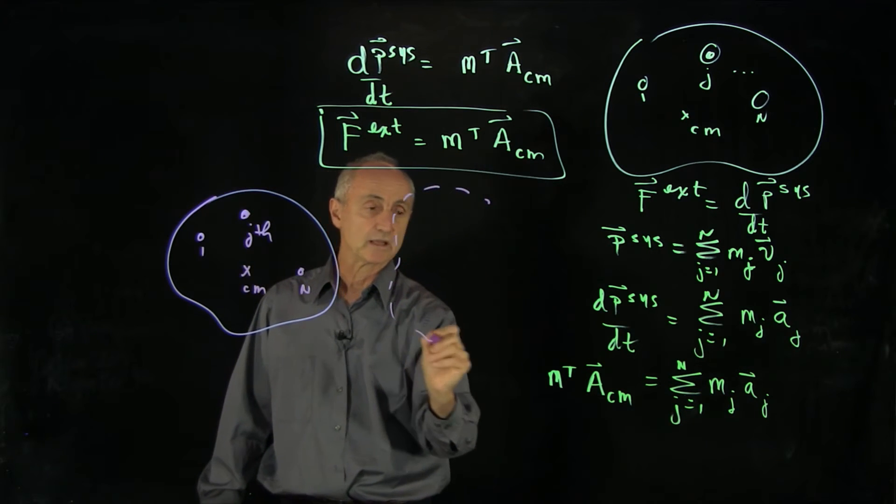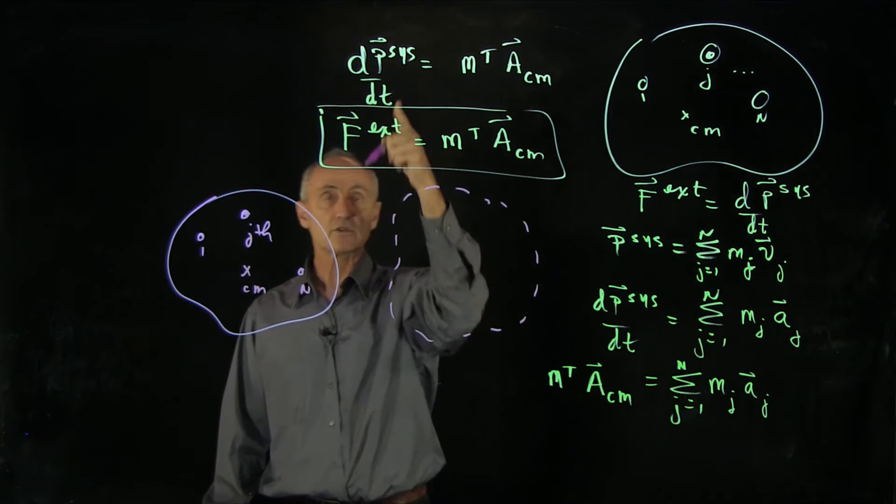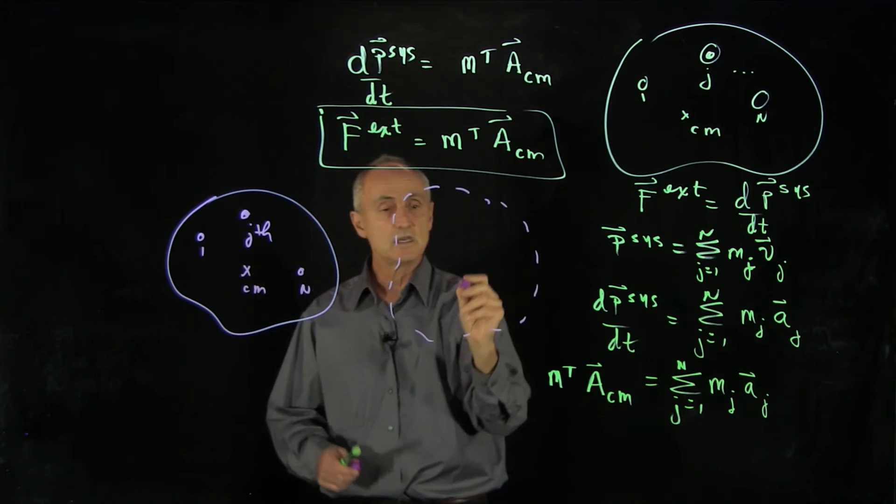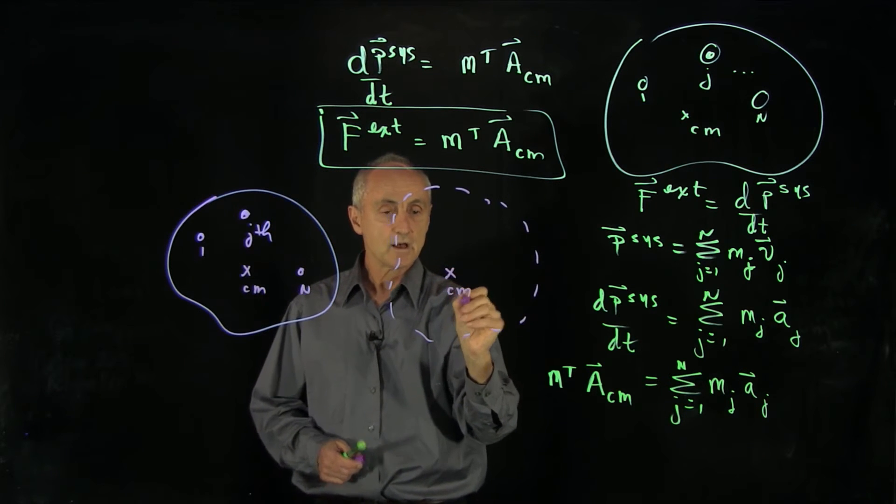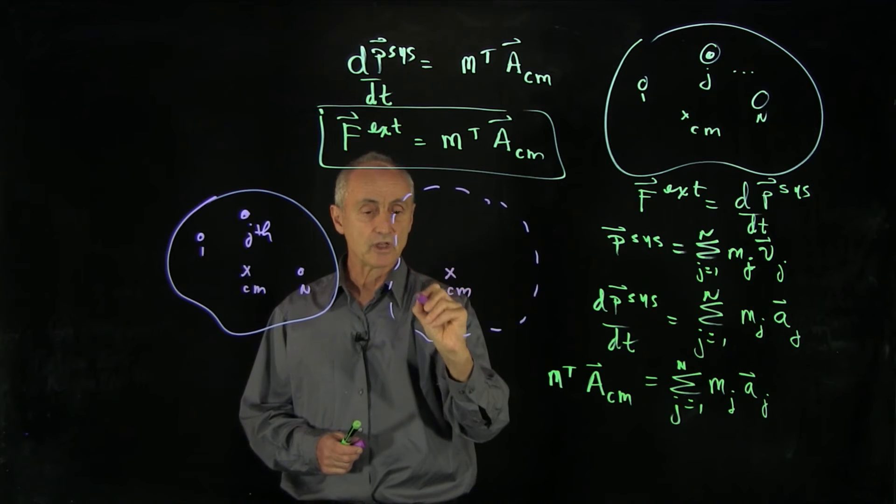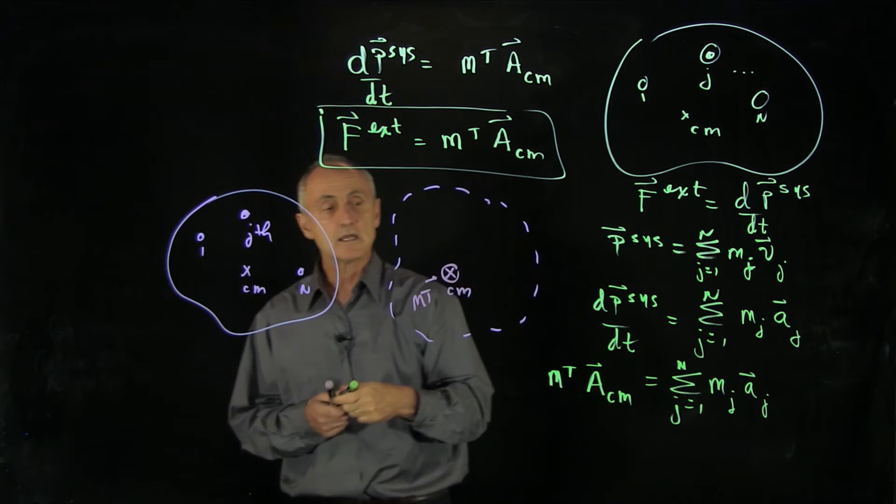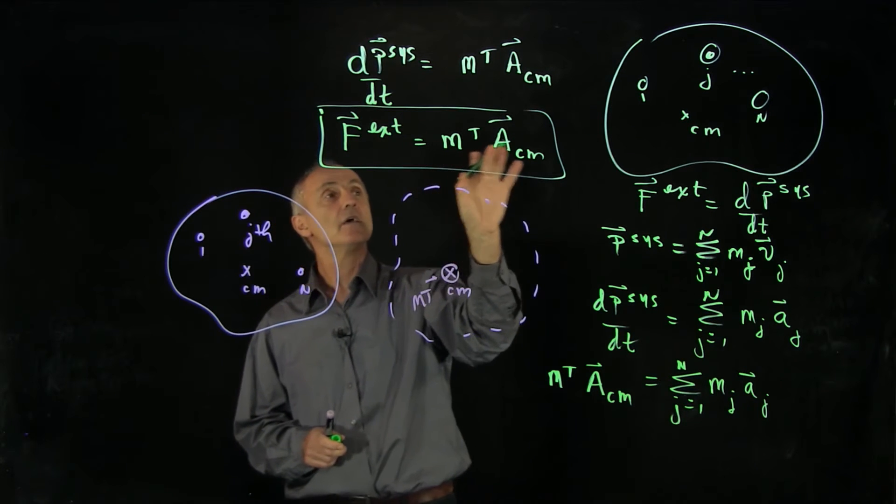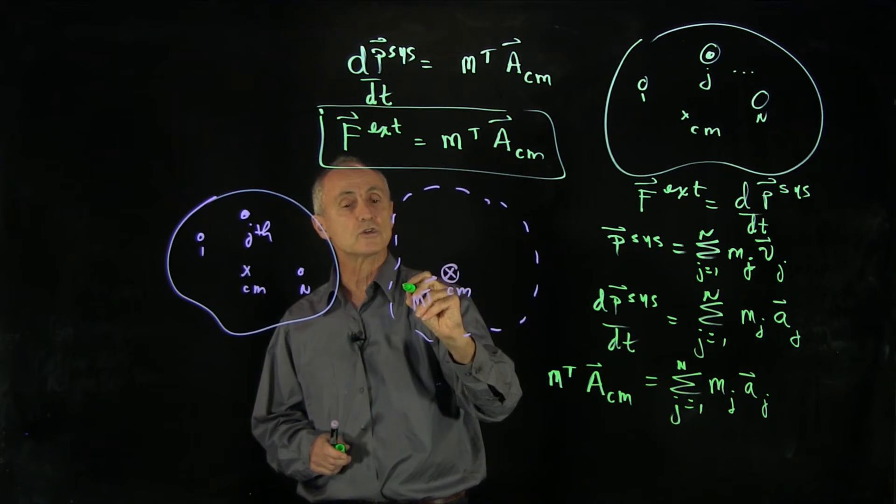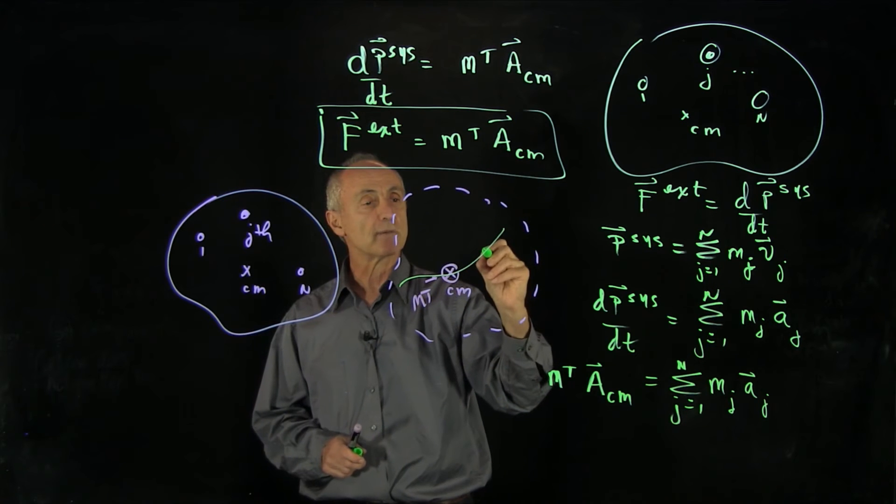Now, I'm going to outline my system like this. And what this equation is telling us is that we can just focus by putting all of the mass, m total, at the center of mass. And that center of mass is going to move according to some trajectory.